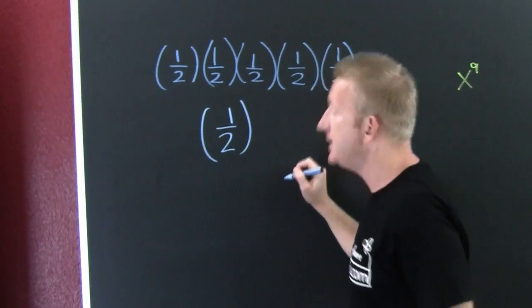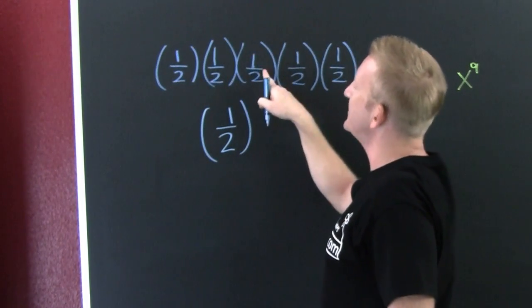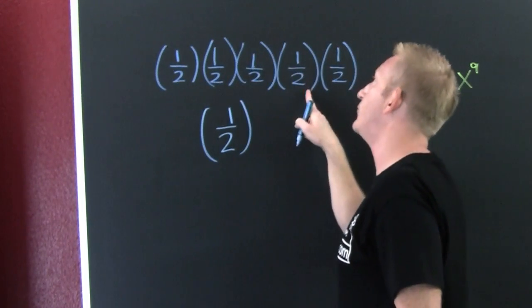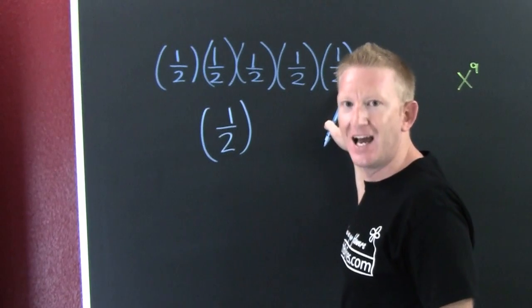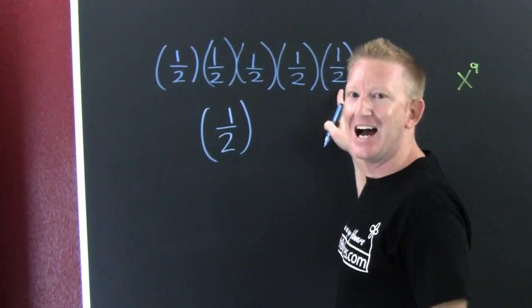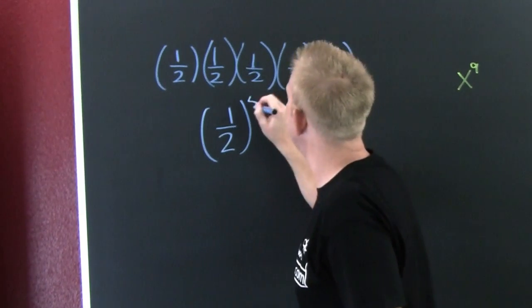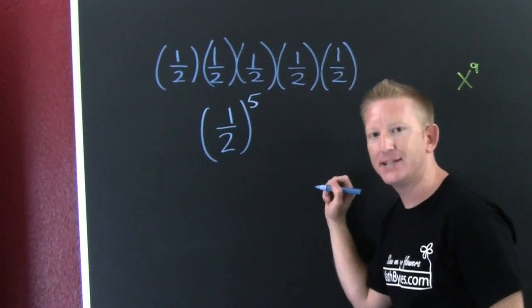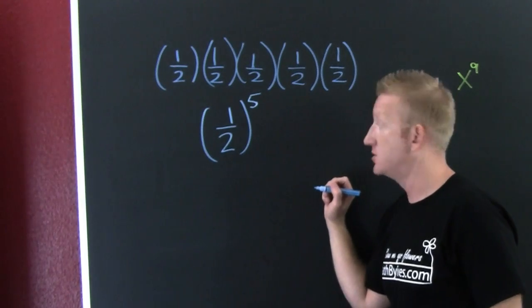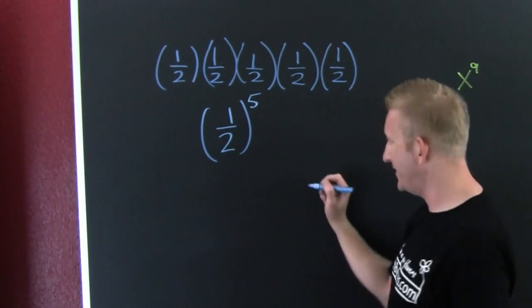How many do you see? Not one, not two, not three, four, five. There are five of them, so I'm going to write it in the compact notation — some exponentiation.